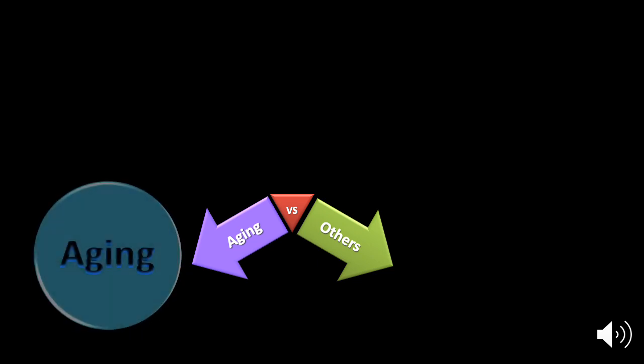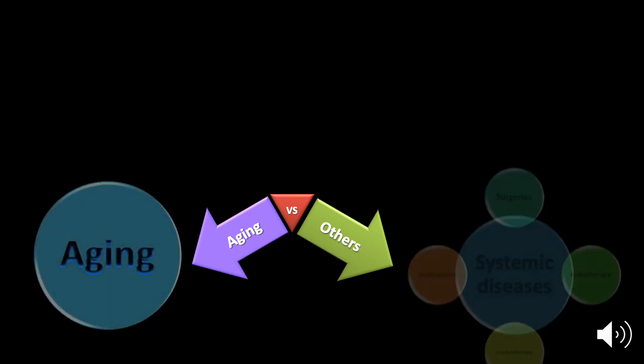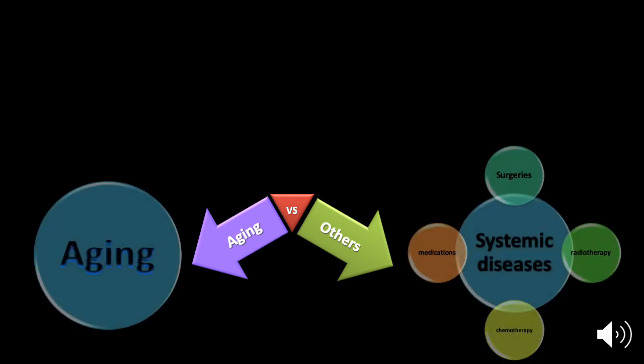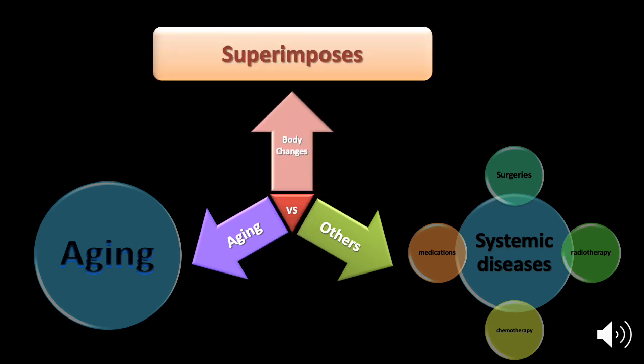Socioeconomic conditions such as bad housing and stress may also reduce life span. Body changes can come from aging or from other conditions. Other conditions include systemic diseases, surgeries, radiation, chemotherapy, or medicines. These factors lead to body changes, which may create superimposition between the sources of these body changes.